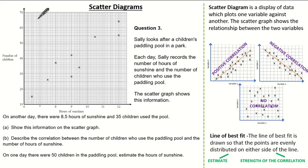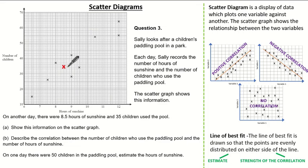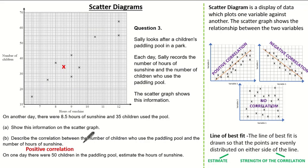In the exam the graph is printed very large for you to see, so plotting will be much easier. Always be aware of your scale when plotting, because if you are more than one little square out, you do not get the marks. So let's plot 8.5 hours of sunshine and 35 children. I can see 8.5 is here and 35 is here. Now we're asked to describe the correlation between the number of children who use the paddling pool and the number of hours of sunshine — this is a positive correlation. It's different from the other question where we were asked to identify the relationship and give a sentence; here we're only asked to describe or identify the correlation.